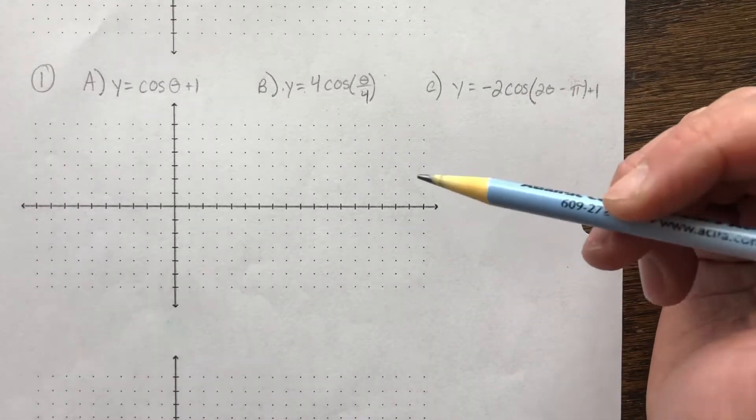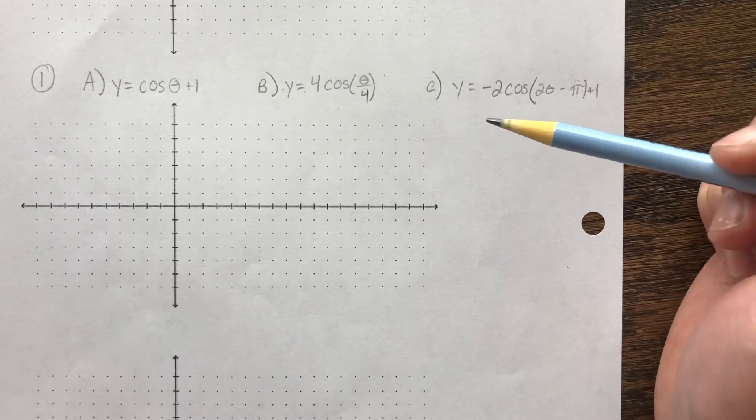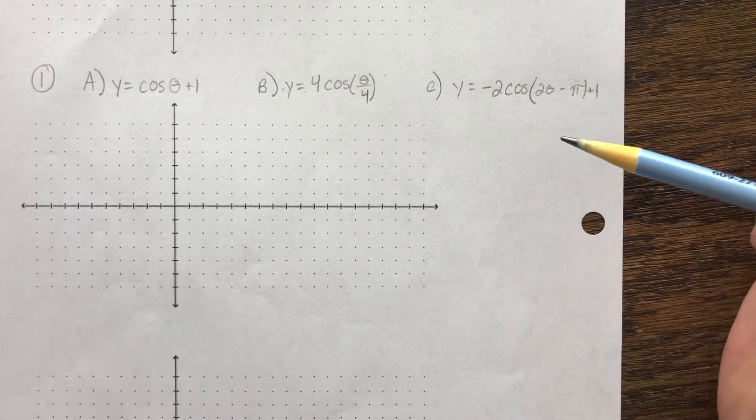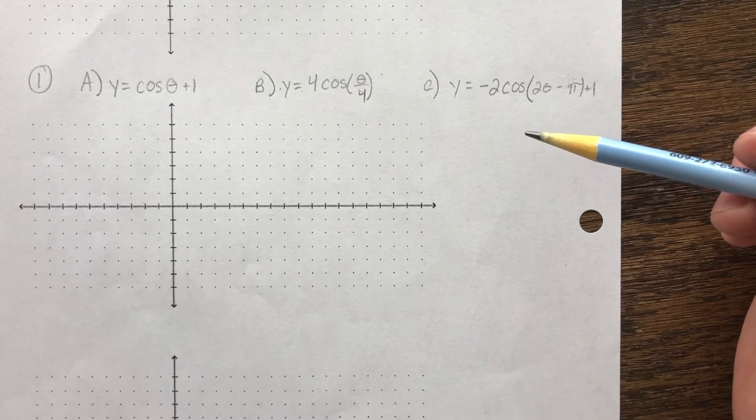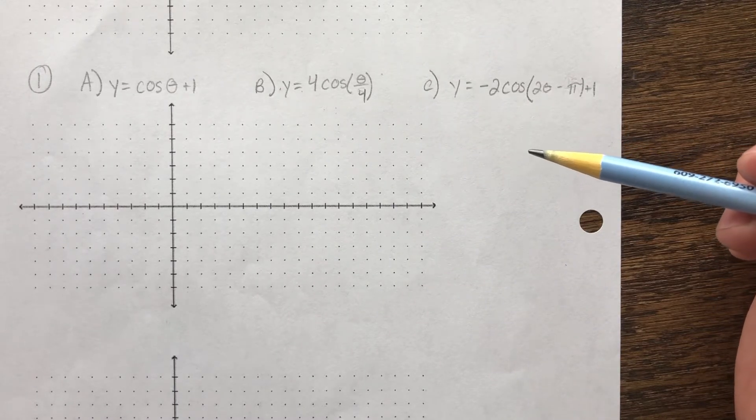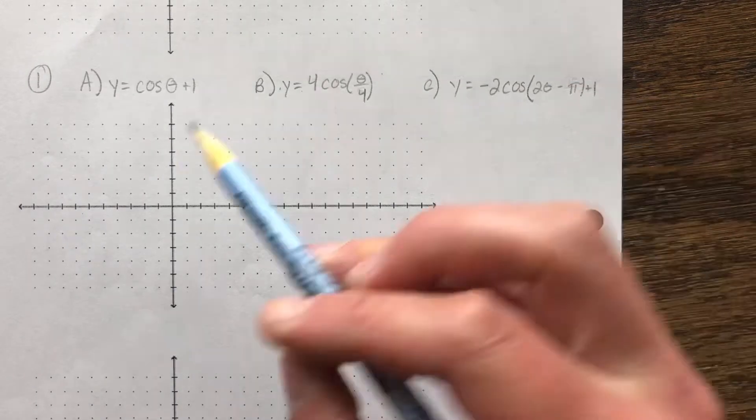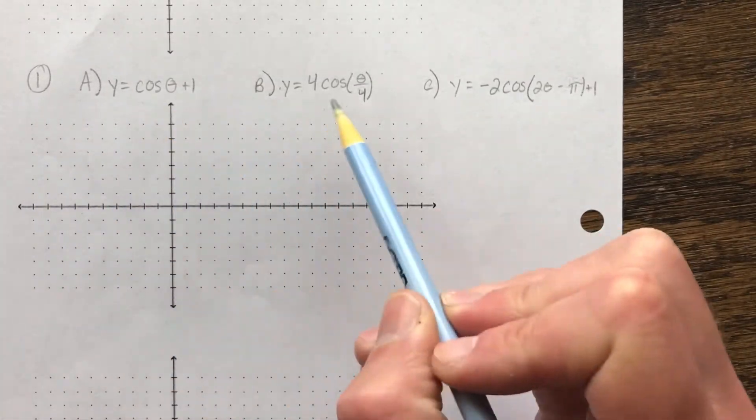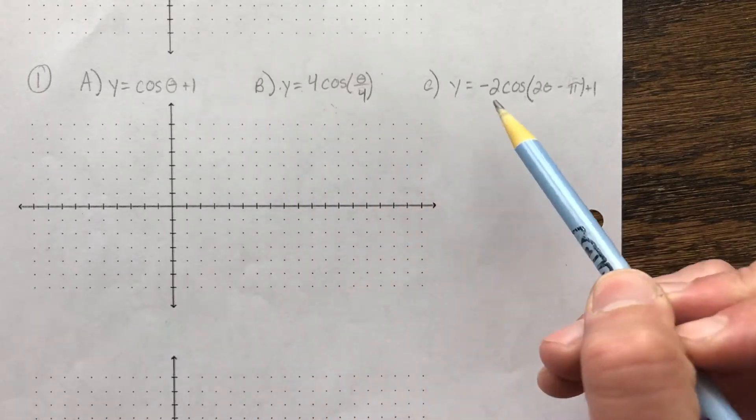Okay, so real quick I just wanted to give an explanation of what you guys are going to see for your graphing. This is an example of one question - you are going to choose one of the three options.